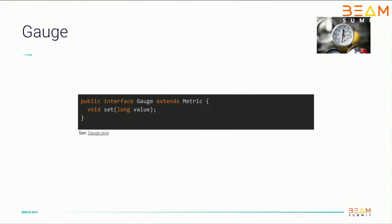Gauges is the first type I'll explain. A gauge holds only the latest value out of all the reported values. For example, think about measuring the size of an unprocessed messages backlog in some IO that you're creating. If you want to show the current size, you would probably use the gauge metric.